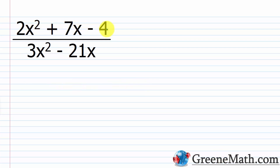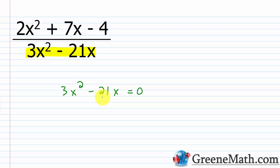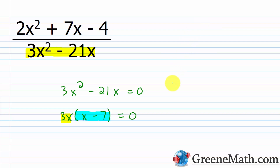Now let's look at another one. We have (2x² + 7x − 4) over (3x² − 21x). I'm only concerned with the denominator, so I set 3x² − 21x equal to 0 and solve. We can factor this by pulling out the common factor of 3x, giving us 3x(x − 7) = 0. To solve this using factoring, I set each factor equal to 0: 3x = 0 and x − 7 = 0.